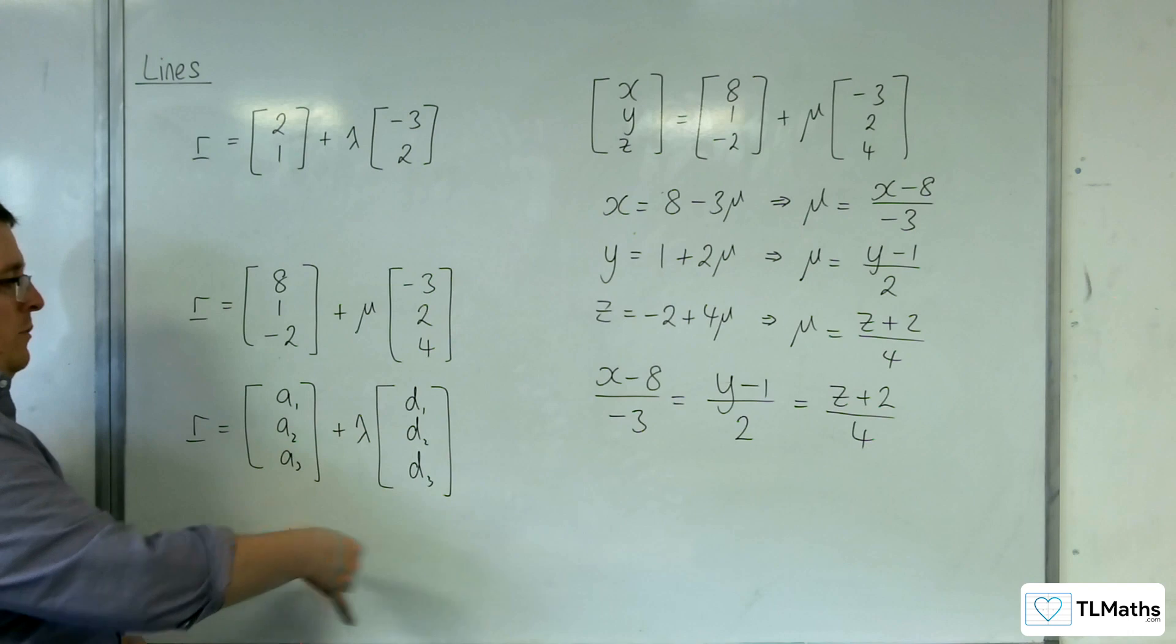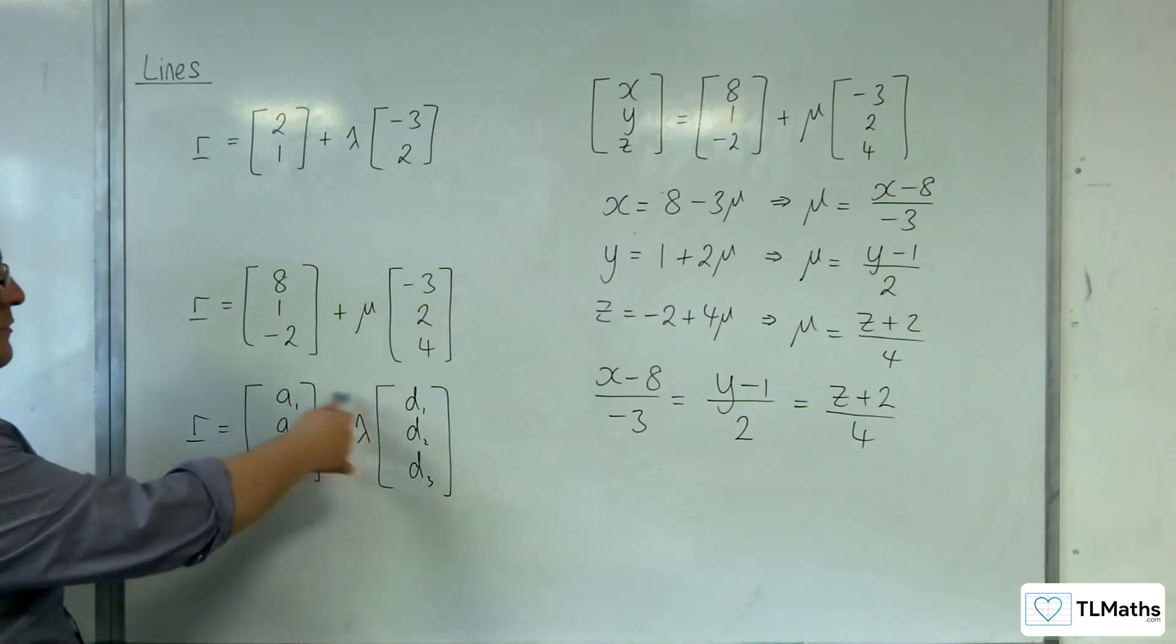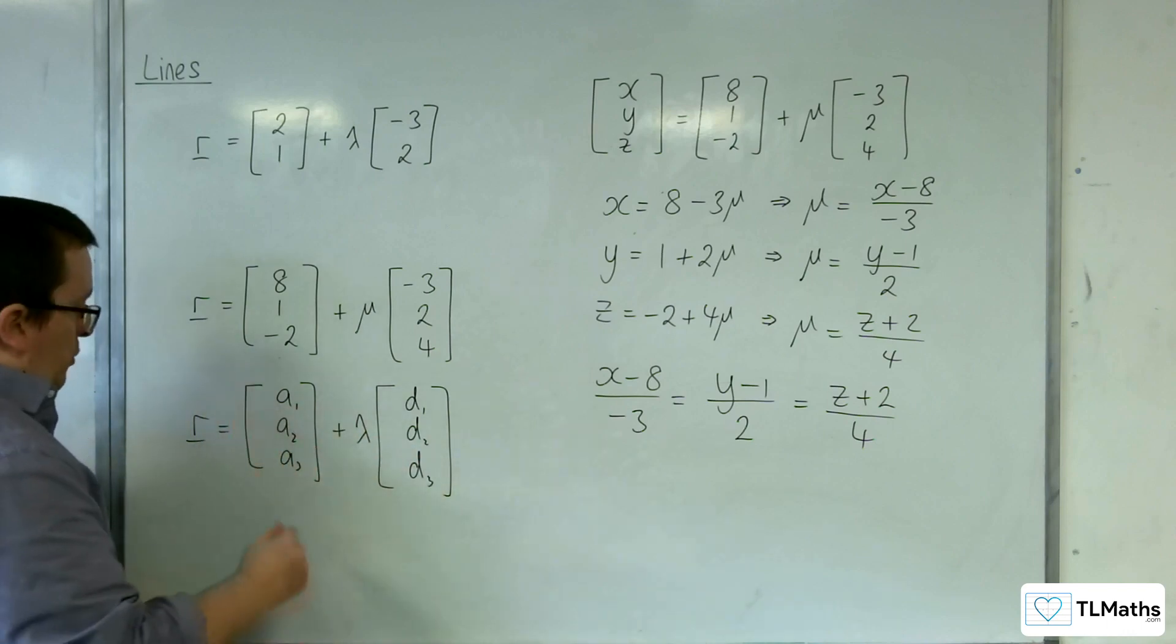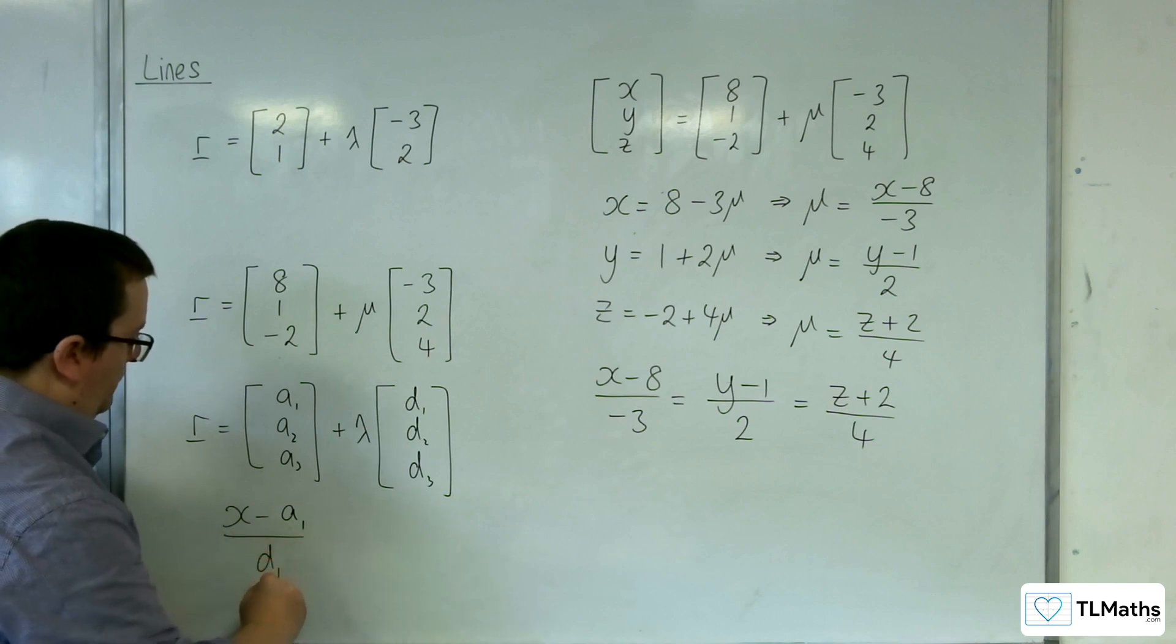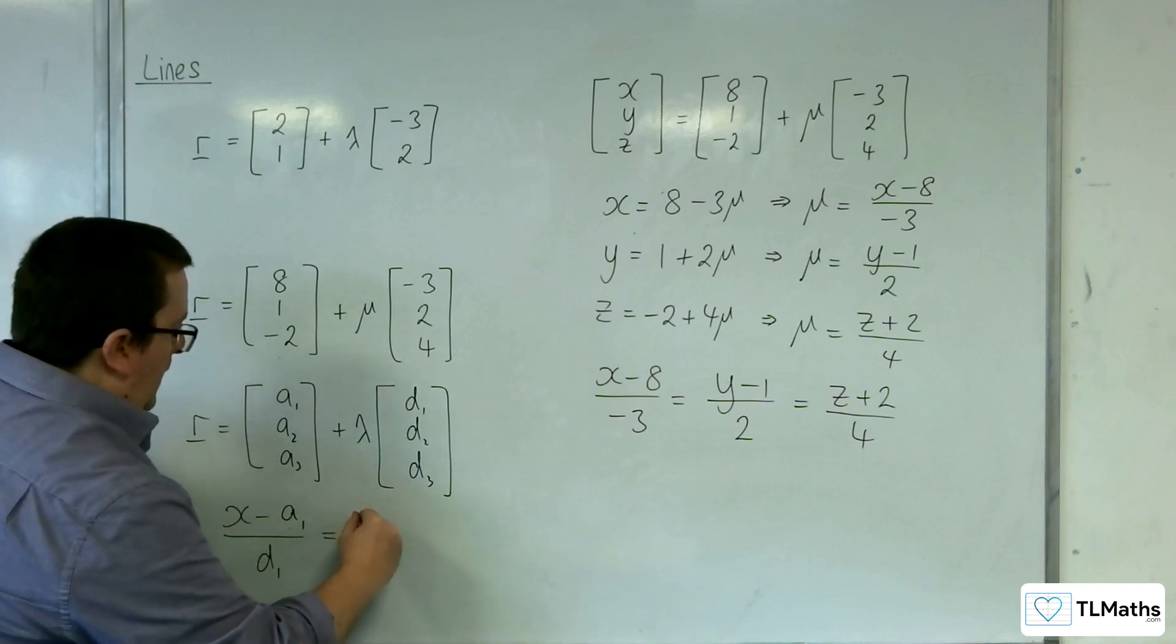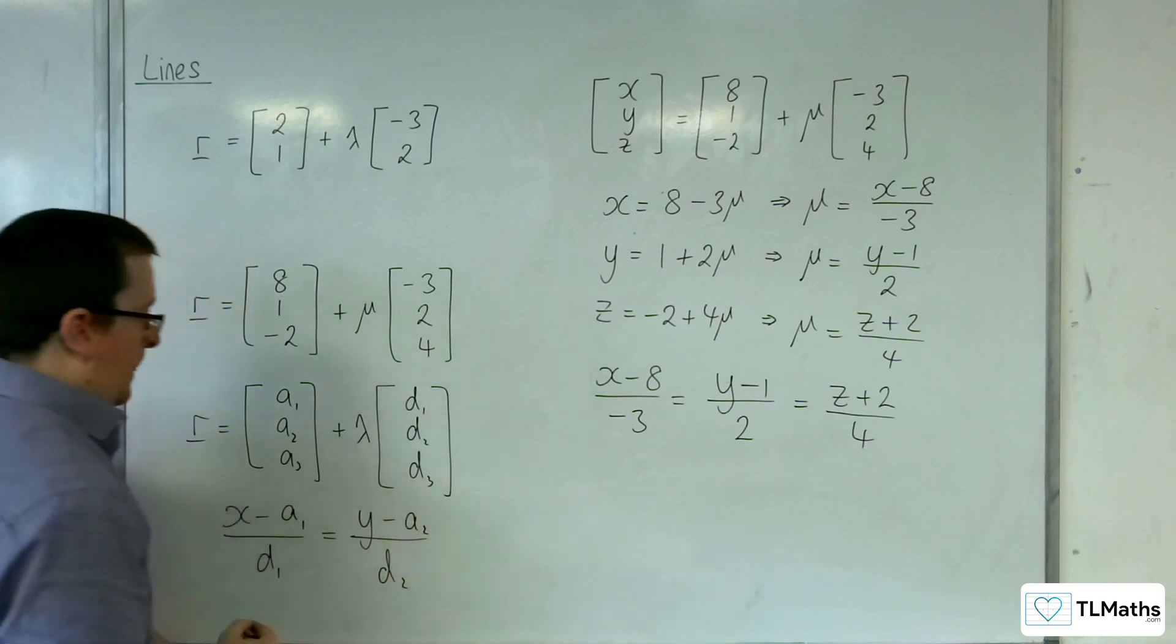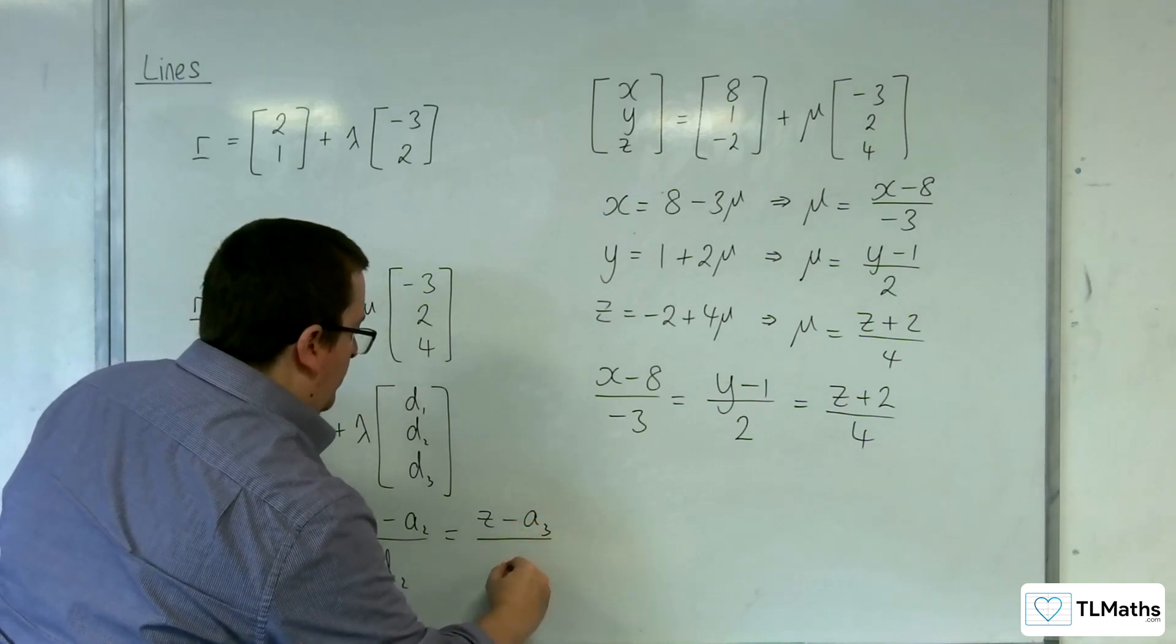So, that is the general equation of a vector, a general vector equation for a line in 3D. So, its Cartesian form would be x take away A1 over D1, and then y, sorry, take away A2 over D2 equals z take away A3 over D3.